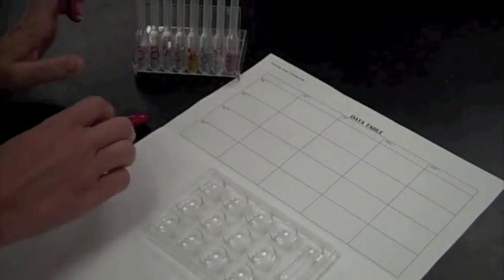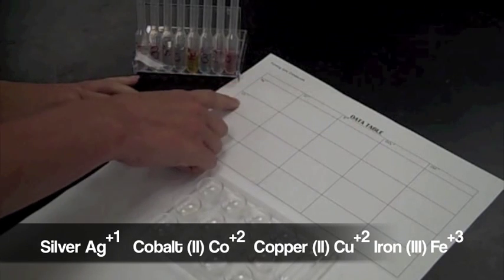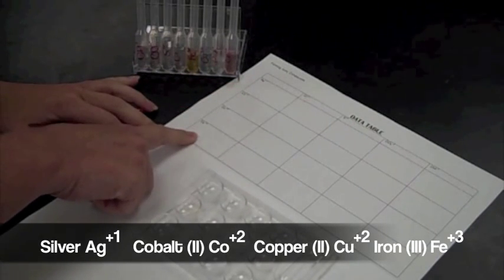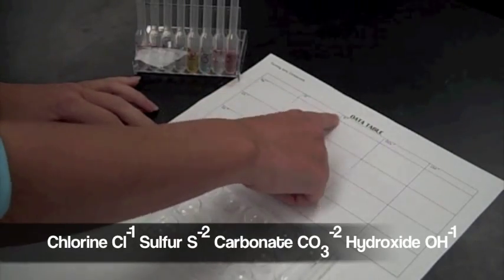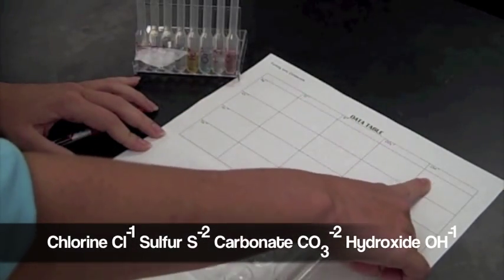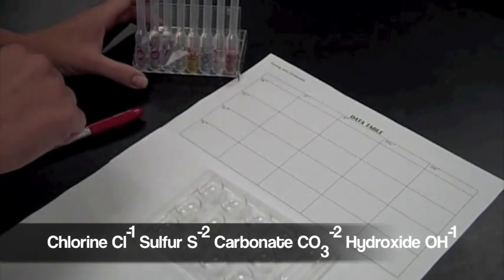So these are our compounds that we have. We're in iron, iron 3 specifically, copper 2. Chlorine, sulfur, carbonate, and hydroxide are going to be our anions.